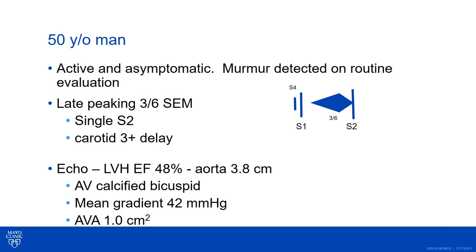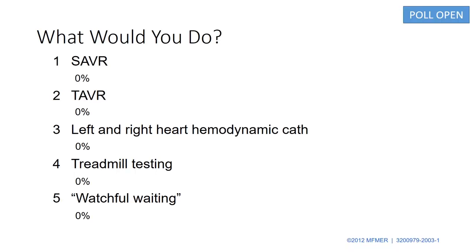The question that comes up is how do you want to manage this patient? Are we going to do a surgical AVR, a TAVR, take him to the cath lab for hemodynamic assessment, put him on a treadmill, or just observe?